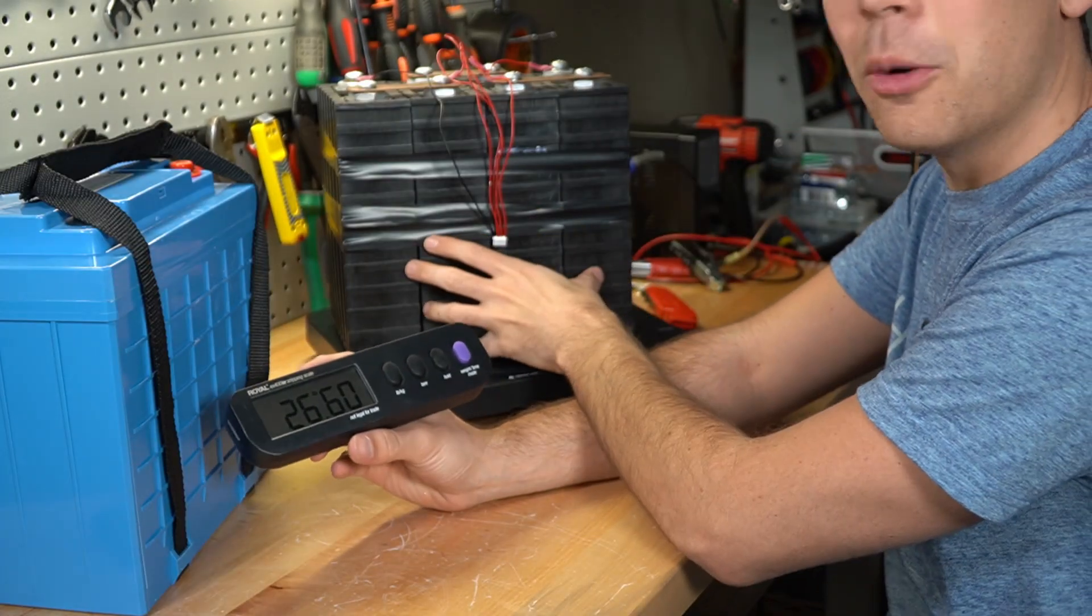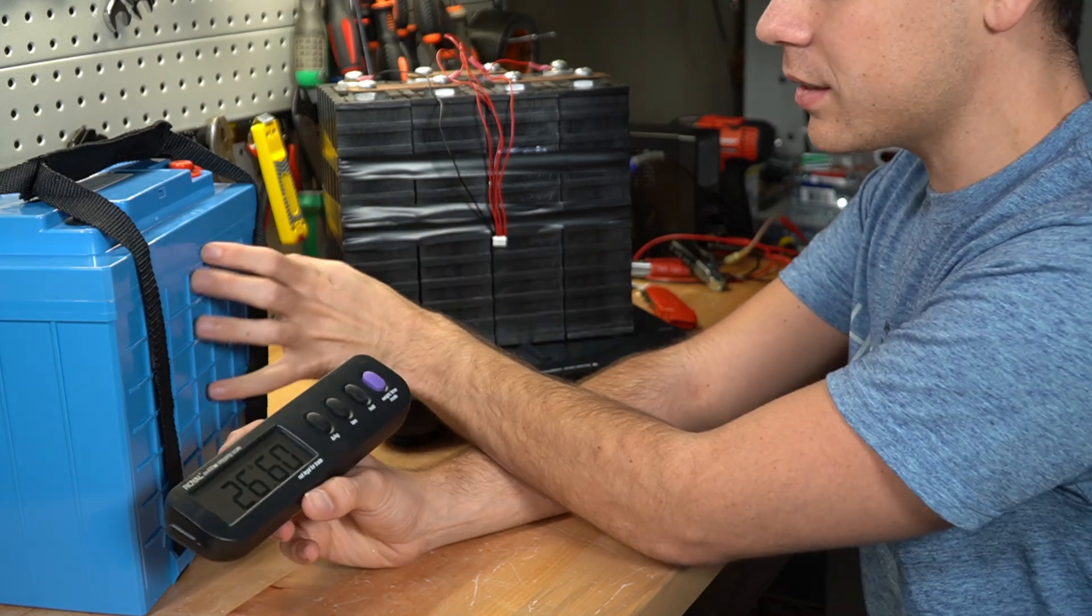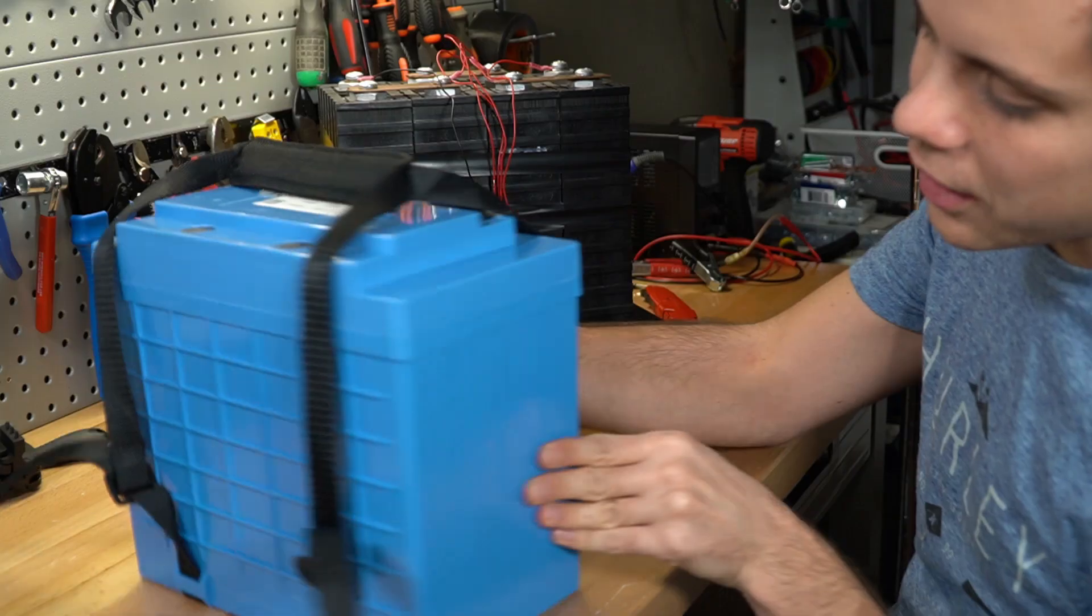Even compared to Xenopoly Prismatics, those are twenty six pounds. These have the same capacity as this thing. And this one doesn't even have a BMS. So this thing is very lightweight.